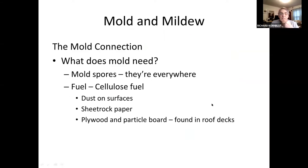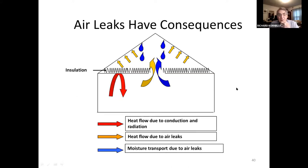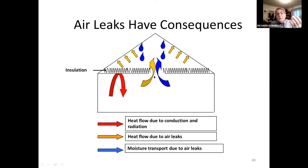So what does mold need? It needs spores, a fuel — which could be dust, drywall paper, plywood, or particle board — and it needs moisture. Air leaks have consequences. The blue represents moisture, the red represents heat, and the orange represents heat flow due to air leaks. Insulation may stop heat transfer by conduction and radiation, but holes at the top of your building will let warm air and moisture transport get to the attic.